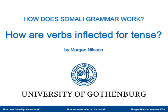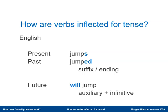In this video I will say a few things about how Somali verbs are inflected for different tenses. If we have a quick look at English, there are three basic tenses. There's the present tense and the past tense, which are marked by suffixes or endings, and then there is a future tense that is formed through the use of an auxiliary that is followed by the infinitive form of the basic verb that denotes the meaning.